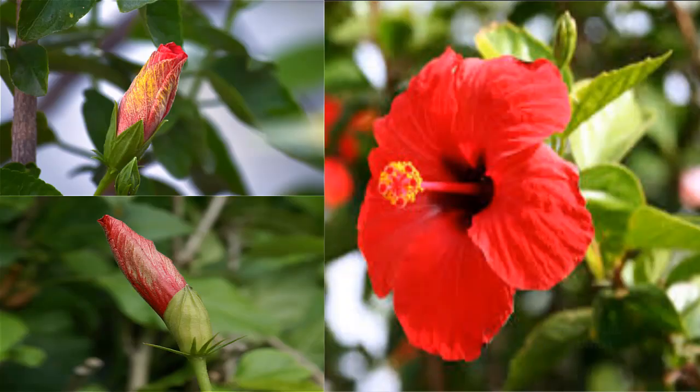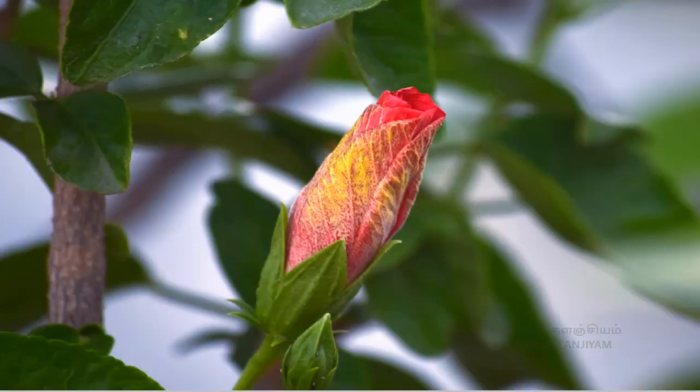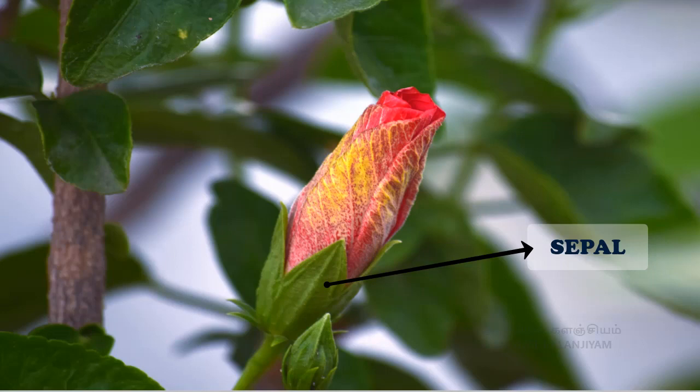Let us collect a few buds and opened flowers of hibiscus and observe it. In a bud, we can see a green color leaf-like structure which covers the whole bud or flower. Each of these green leaf-like structures present as an outermost layer is called a sepal. This outermost ring of sepals is known as calyx.